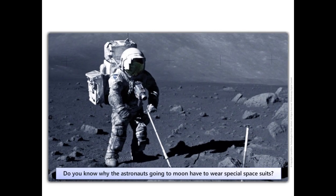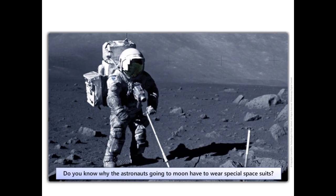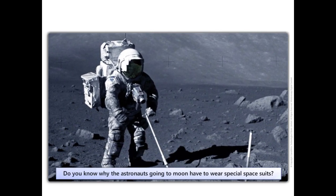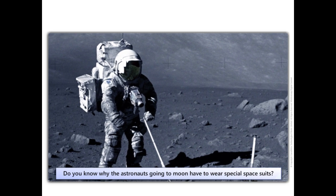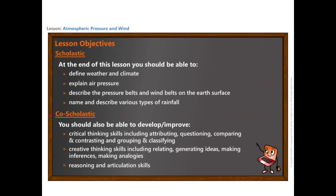Do you know why the astronauts going to the moon have to wear a special suit? At the end of this lesson, you should be able to define weather and climate, explain air pressure, describe the pressure belts and wind belts on the Earth's surface, and name and describe various types of rainfall.